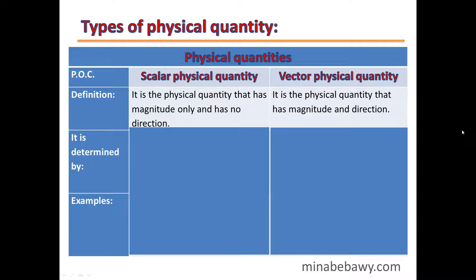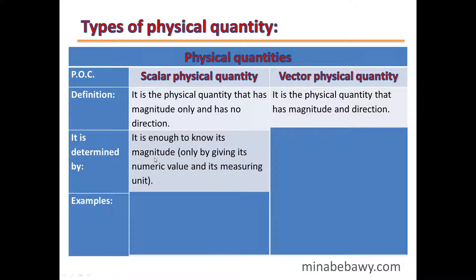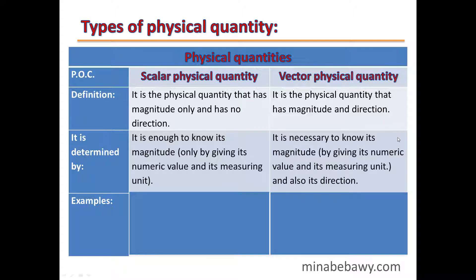While a vector is the physical quantity that has magnitude and direction. For a scalar physical quantity to be defined, we need to know its magnitude only by giving its numerical value and its measuring unit. But for a vector physical quantity, it is necessary to know its magnitude — its numerical value and measuring unit — and also its direction.